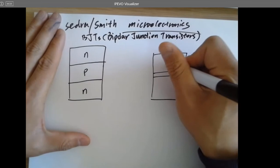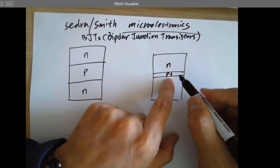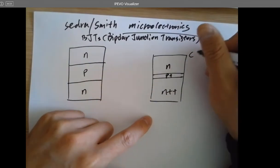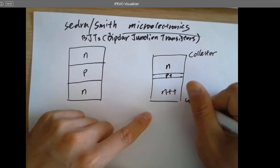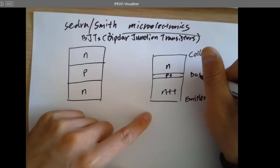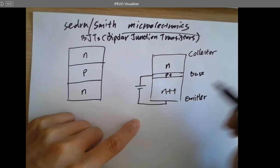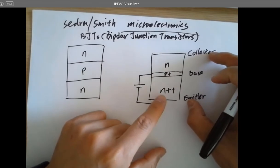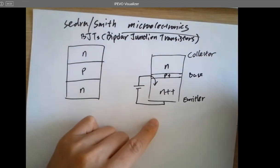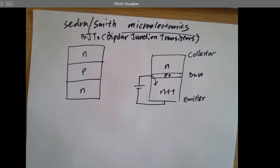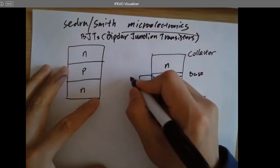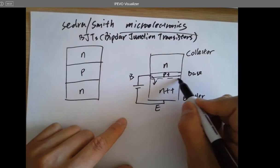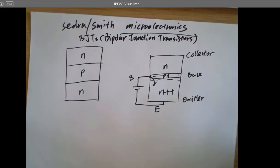The NPN BJT actually looks like this: N, P, N. The P region is a little bit more heavily doped compared to one of the N regions. This one here is really heavily doped, and we call this the collector terminal. This is the emitter. This is the base. BJT stands for Bipolar Junction Transistor. You have to forward bias the PN junction between base and emitter — that's a pin junction. There will be a depletion region there.